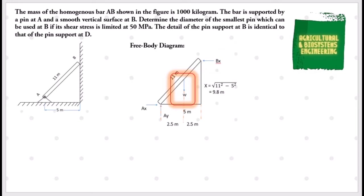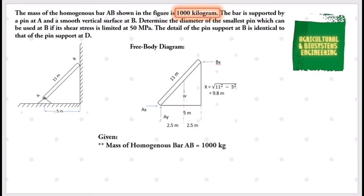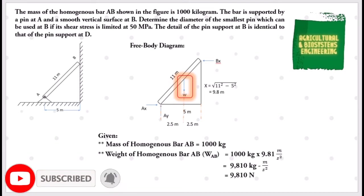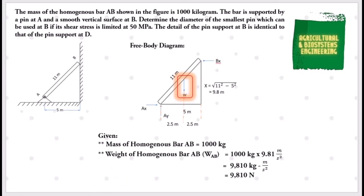After making our free body diagram, let us proceed in identifying our given. First, we have the mass of homogeneous bar AB of 1000 kg. Since weight can be solved by multiplying mass and the acceleration due to gravity, we multiply the mass by 9.81 m/s². We have weight equal to 1000 times 9.81, giving us a weight of 9810 N.